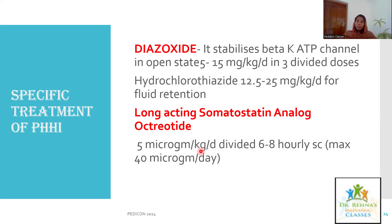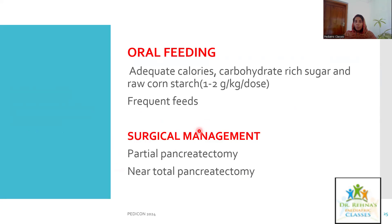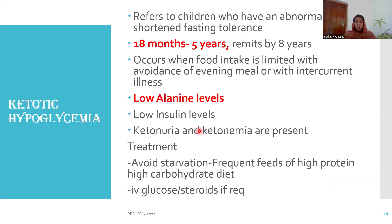A long-acting somatostatin analog — octreotide — at 5 mcg/kg/day in divided doses every 6 to 8 hours, with a maximum of 40 mcg/kg/day, can be tried. Oral feeding with adequate calories, carbohydrates, sugar, and raw cornstarch should be encouraged along with frequent feeds. In cases of persistent hyperinsulinemic hypoglycemia of infancy (PHHI) not responding to medical management, consider surgical management — partial pancreatectomy or near-total pancreatectomy.